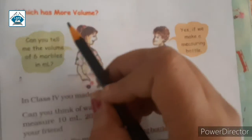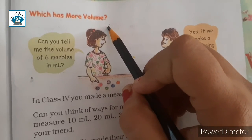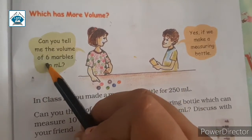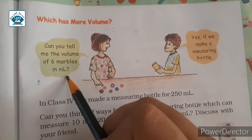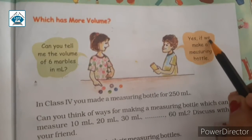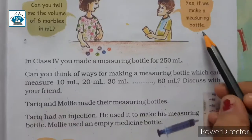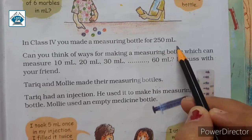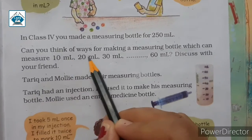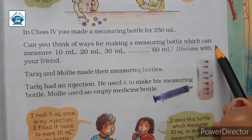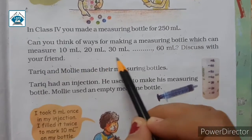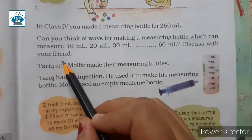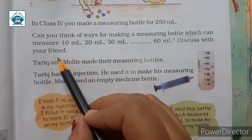Now, which has more volume? Sarika is asking: can you tell me the volume of 6 marbles in ml? The boy says yes, if we make a measuring bottle. In Class 4, you made a measuring bottle for 250 ml. Can you think of ways for making a measuring bottle which can measure 10 ml, 20 ml, 30 ml, and 60 ml? Discuss with your friend. Similarly, this type of activity we will do here.